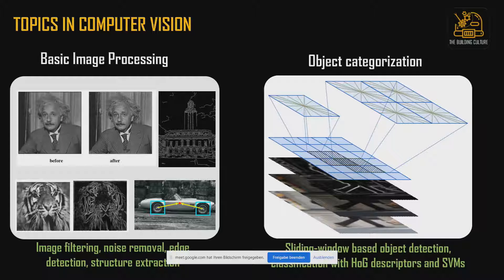Another category is object categorization. Here we use sliding window-based object detection, classification with HOG feature descriptors, and support vector machines. These essentially involve using conventional machine learning and computer vision approaches for performing object categorization. The image shown here is that of HOG descriptors.